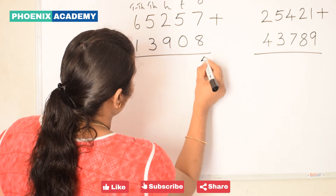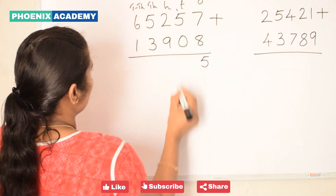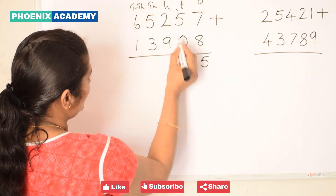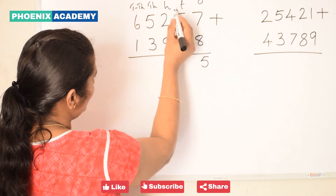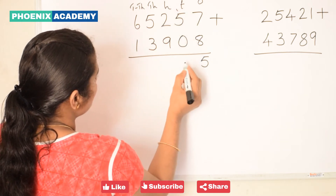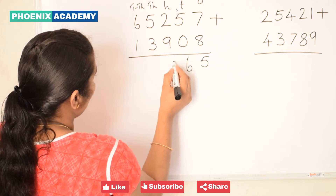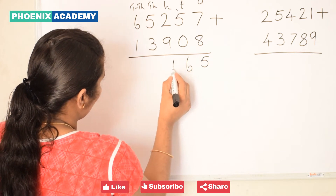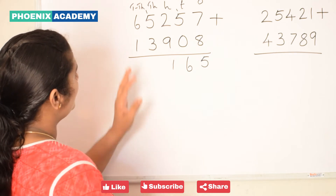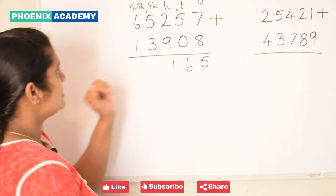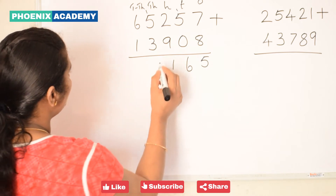We write 5 here and 1 is carry-forwarded to the tens place. 5 plus 0 plus 1 carry-forwarded value equals 6. Then 2 plus 9 is 11: we write 1 here and 1 is carry-forwarded to the thousands place. Let's add the thousands values: 5 plus 3 is 8, plus 1 carry is 9.